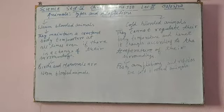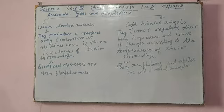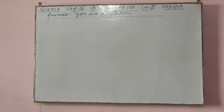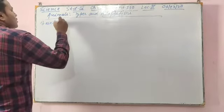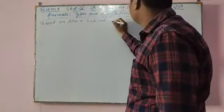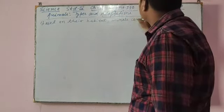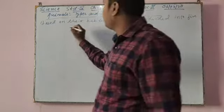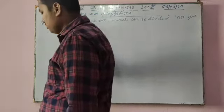So now we will move to the next topic: where animals live. Animals can live in different habitats. Based on their habitat, animals can be divided into five groups.